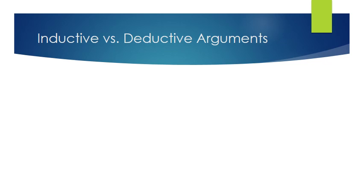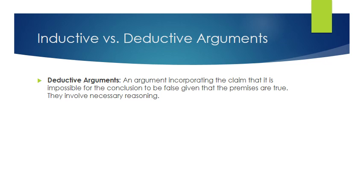The first thing is that we have inductive and deductive arguments. Deductive arguments incorporate claims that make it impossible for the conclusion to be false if the premises are true, so you're dealing with necessary reasoning. Examples include math — two plus two is four — definitions, categorical syllogisms, and disjunctive syllogisms: either A or B, not A, therefore B. It's impossible to end up with A, so deductively it's going to be B.